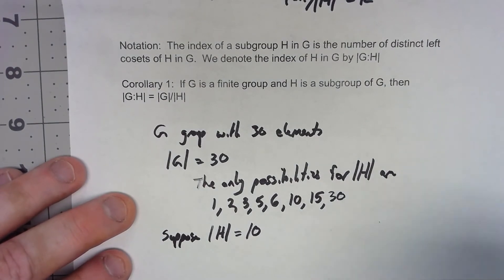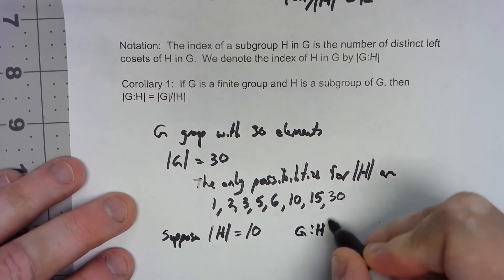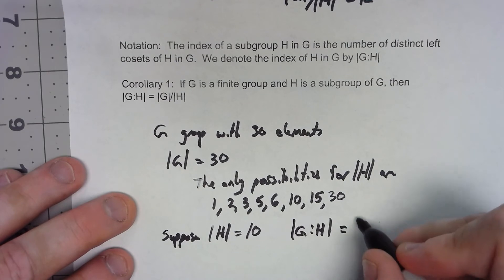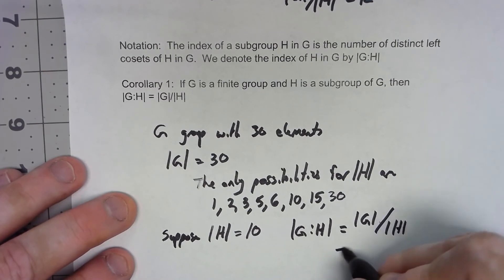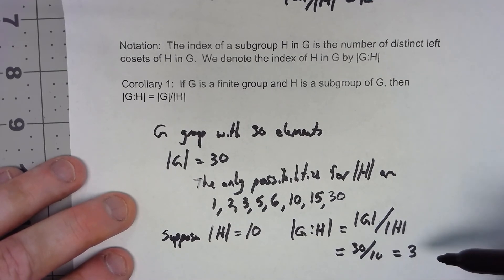So now we can further say that the index of H in G has to be the order of G over the order of H, is 30 over 10 equals 3. In other words, H has three distinct cosets.